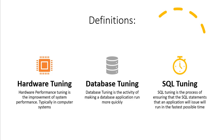Hardware performance tuning is the improvement of system performance for a computer system. There are multiple factors to consider: memory, RAM, and CPU usage. If you see that something is not up to the required level, we have to improve that hardware performance.